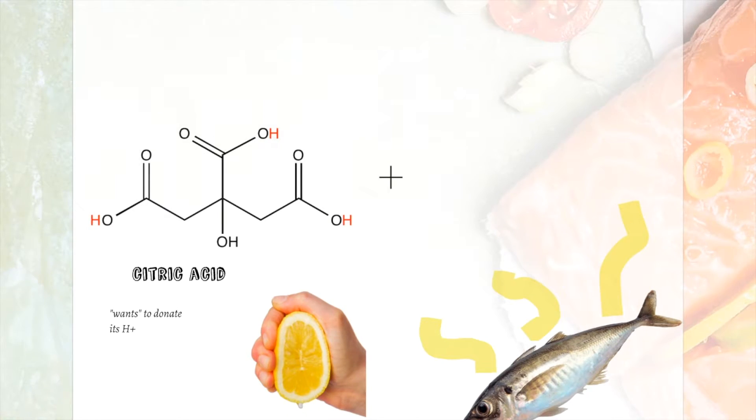When you squirt lemon juice onto fish, the weak acid in lemon juice, citric acid, will combine with the weak base in fish, methylamine, in an acid-base reaction, and they will both reach a new equilibrium.